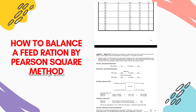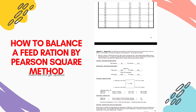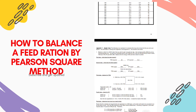The first step is: what does the steer require? As we have seen in the table, TDN requirement is 80% and crude protein requirement is 15.4%. The second step is: what does our feed supply? The ingredients we are using in the ration are: alfalfa hay, which supplies 60% TDN and 20% crude protein, and grain mix, which has 85% TDN and 14% crude protein.